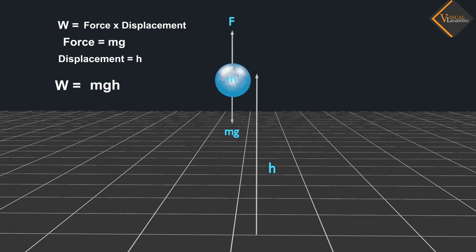Since work done on the object is equal to MgH, and energy equal to MgH units is gained by the object, this is the potential energy of the object.